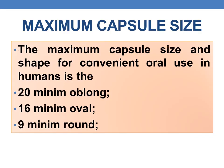Coming to the maximum size, the maximum size of a capsule that is convenient for oral use in humans is 20 minims oblong, 16 minims oval, and 9 minims round. So in case of round capsules, the maximum allowable capsule size is 9 minims; in case of oval shaped, it is 16 minims; and in case of oblong capsules, it is 20 minims. These are the maximum capsule sizes that are convenient for oral use in humans.